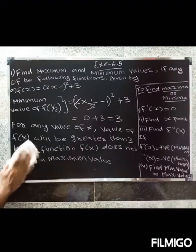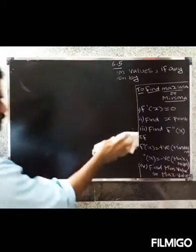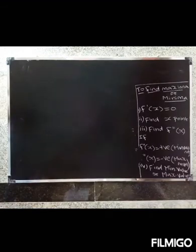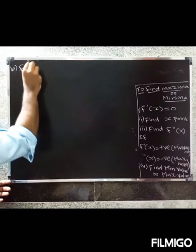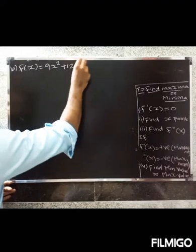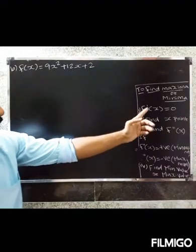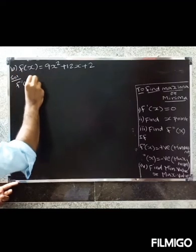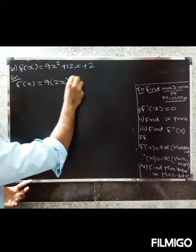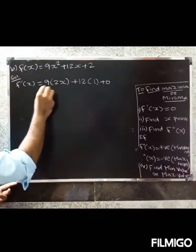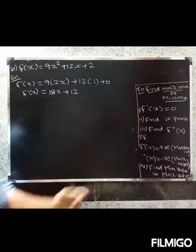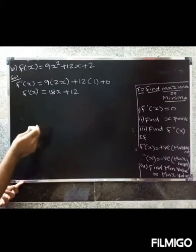Second question: f(x) = 9x² + 12x + 2. First, find f'(x) and set it equal to zero. Differentiating: f'(x) = 9 × 2x + 12 × 1 + 0 = 18x + 12.